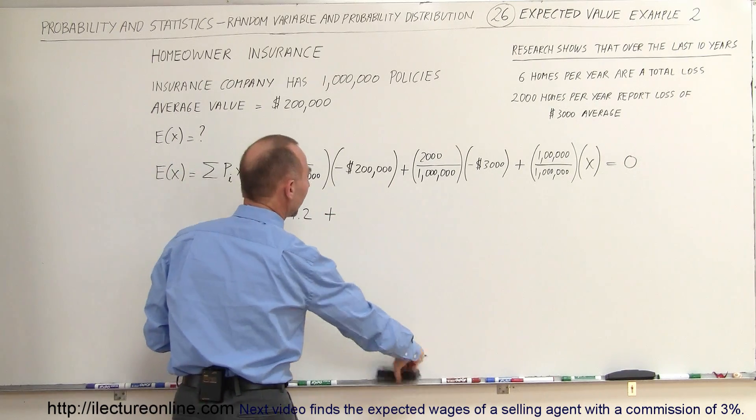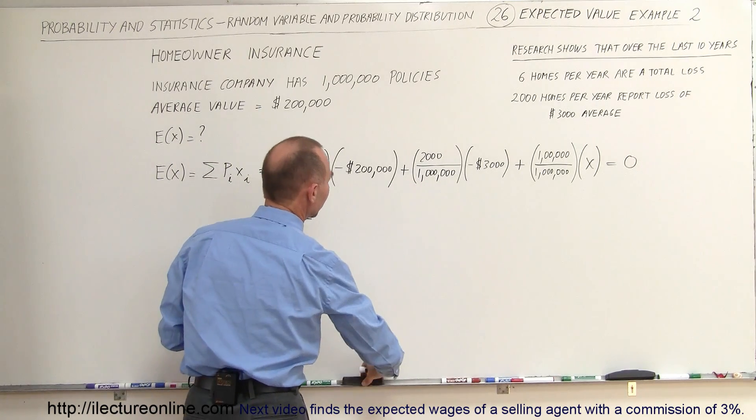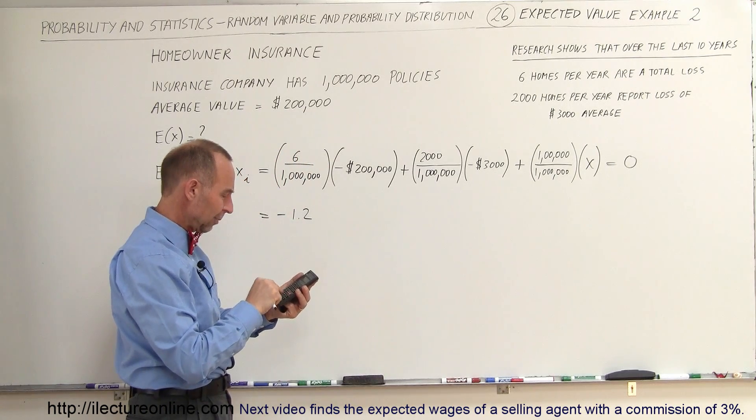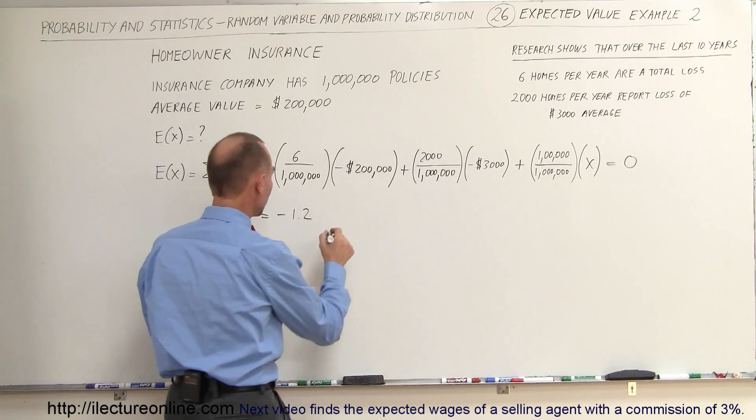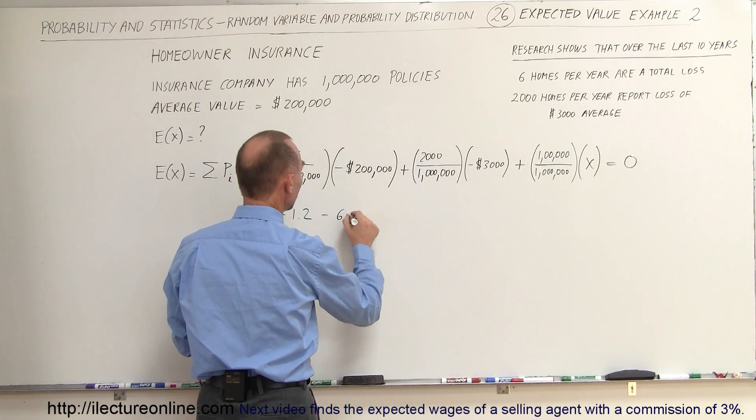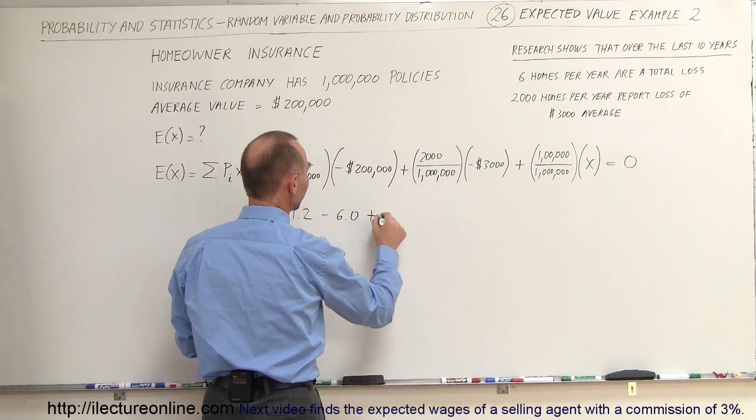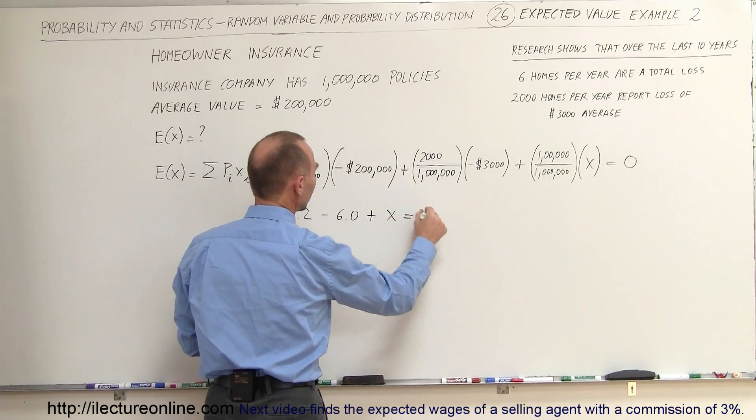Actually it would be minus again, because we have a minus there, so it would be 2,000 times 3,000, divide that by a million, so it would be minus 6.0, and then would be plus X equals zero.